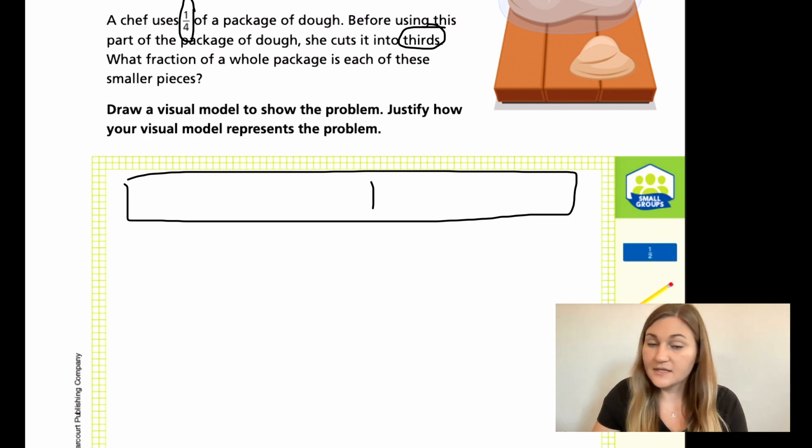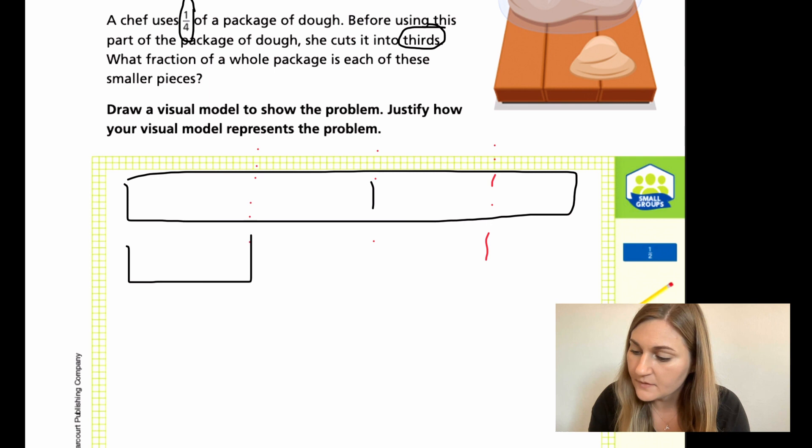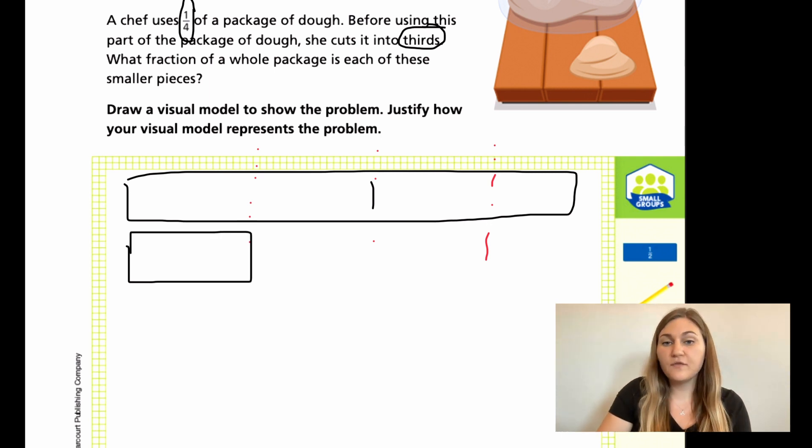If you were going to cut this into fourths, because the chef uses a fourth of the package, I'm going to use red to just show where I would be cutting. So that would be fourths, right? So just this section here is going to be that one fourth of the package that the chef is using.